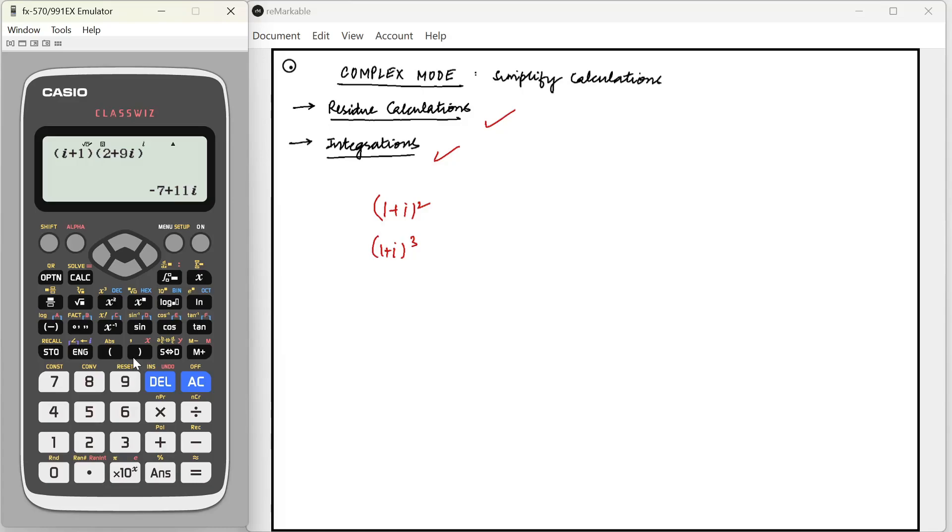Now in suppose residue calculations we have to calculate a function, say z square divided by one plus z into two plus z or something like that, at z is equal to say three plus four i or something. You commonly encounter these things in your residue calculations.